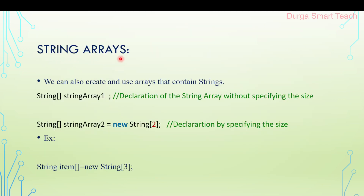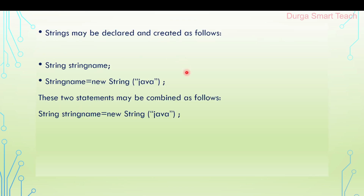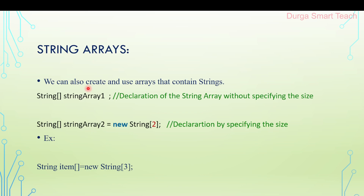The next one is a string array. Using a character array, you can store a collection of characters; using a String variable, you can store only one string. But if you want to store a collection of strings — for example, 10 employee names — it is not possible to store them in one variable, so that's why we use a string array.